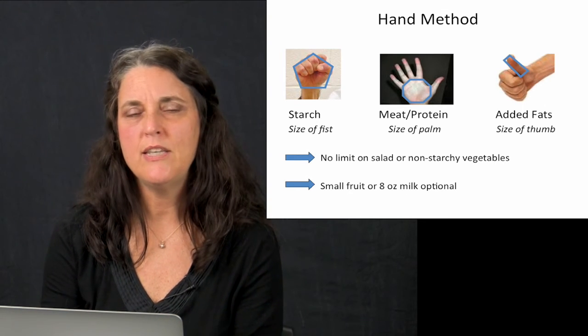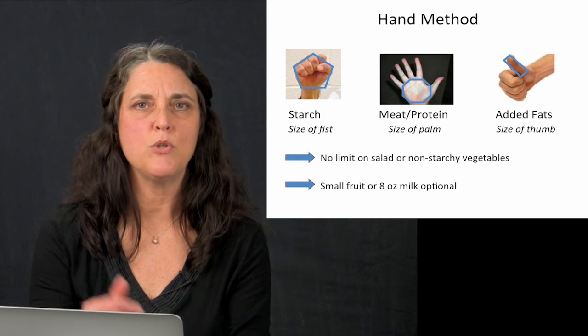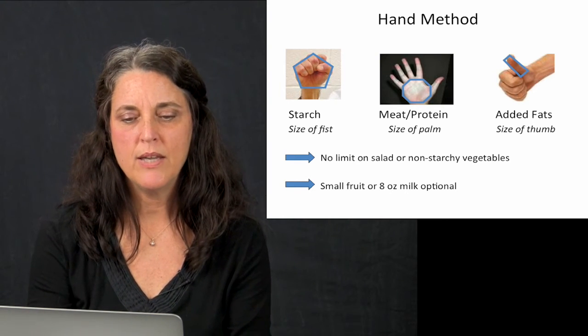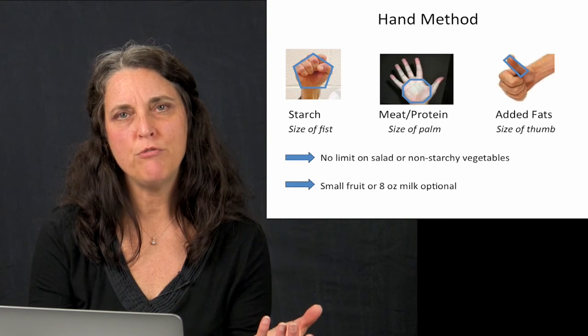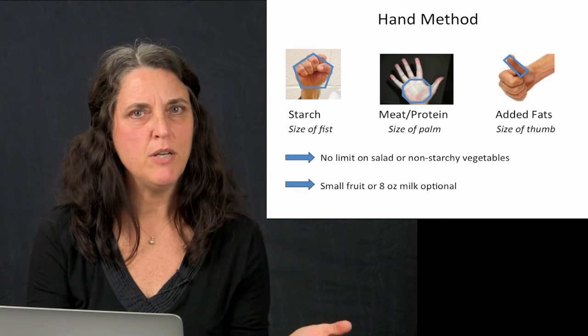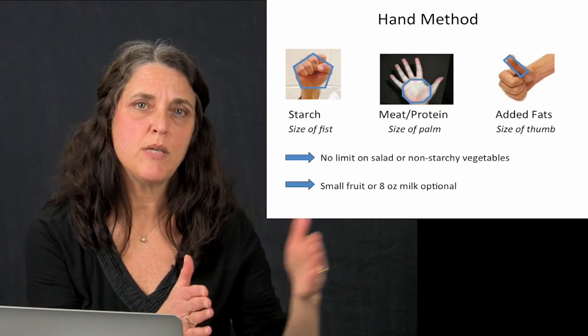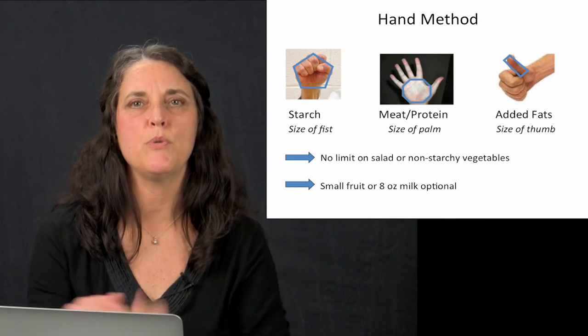So there would be no limit on leafy green salads, raw vegetables, non-starchy steamed or cooked vegetables either. And then encouraging a small fruit, meaning the size of a tennis ball to a baseball or having a cup of milk if you'd like. And that can often be with a meal, but it could just as easily be between meals and having the fruit between meals.